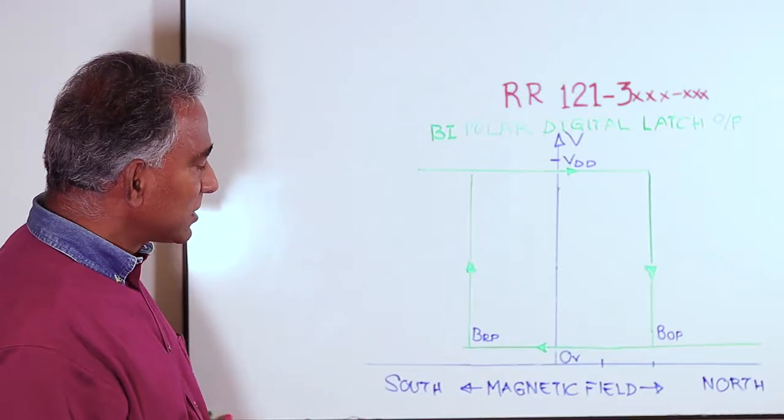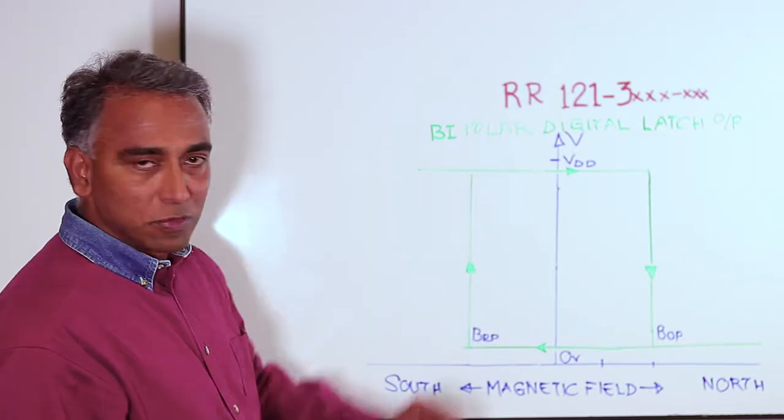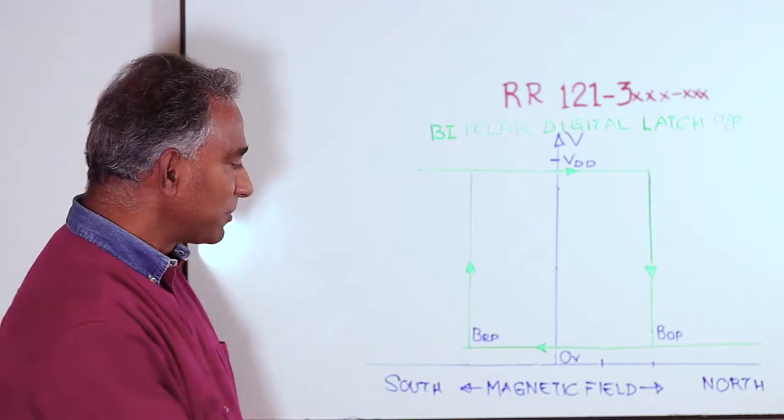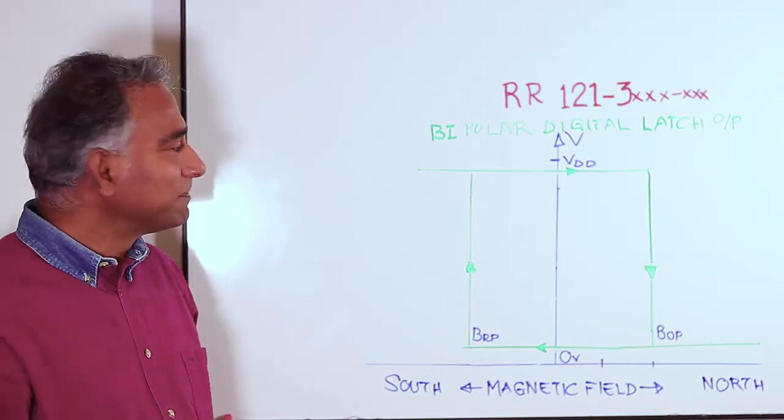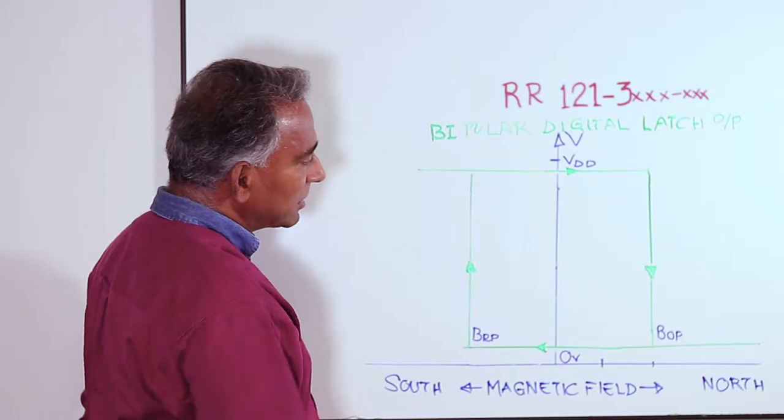What that means is the sensor could have one of two output conditions depending on what the previous state of the magnet position was. Let's follow that along these lines here.